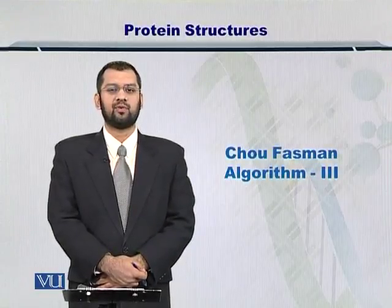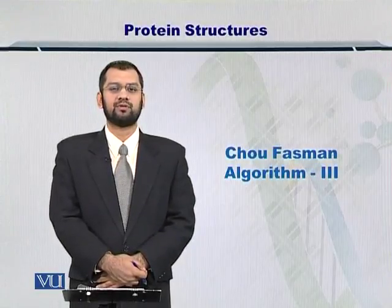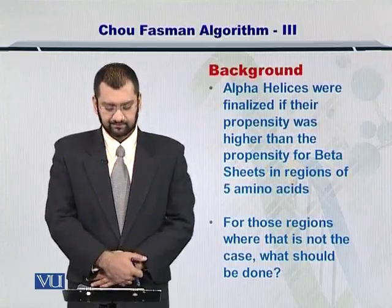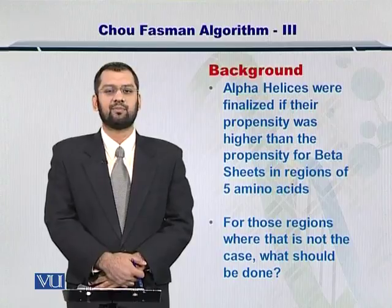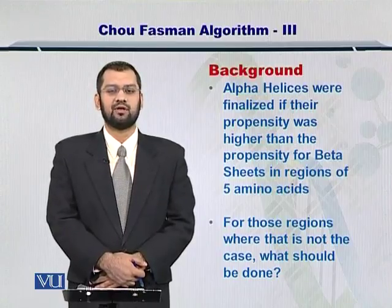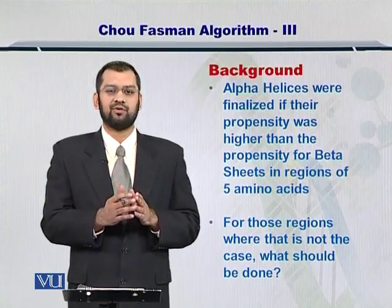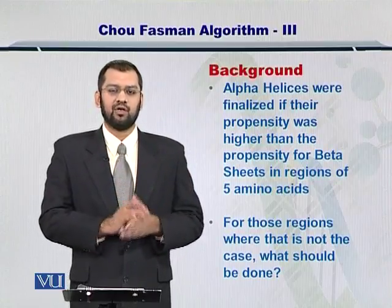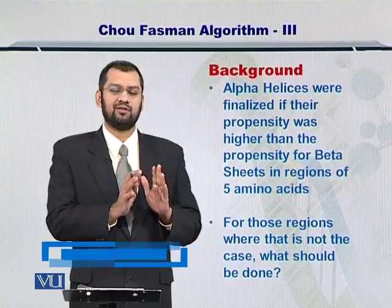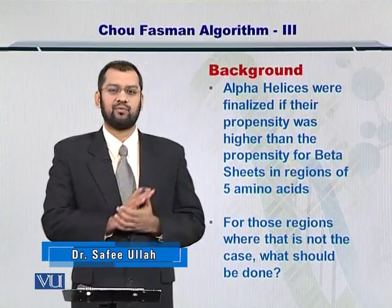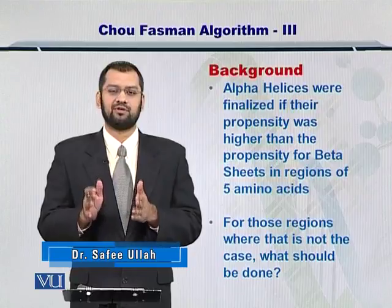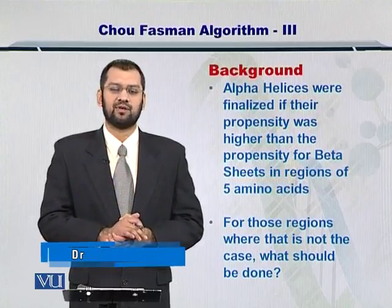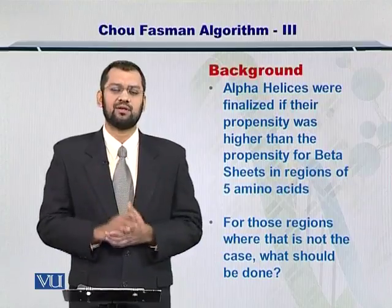Dear students, in this module I will continue to talk about the Chou-Fasman algorithm. We have already finalized the alpha helices — if the propensity for alpha helices for 5 contiguous amino acids was greater than the propensity for formation of a beta sheet. So once we have finalized the alpha helices, the remaining amino acids can now be evaluated for their tendency to form a specific secondary structure such as a beta sheet or a loop.